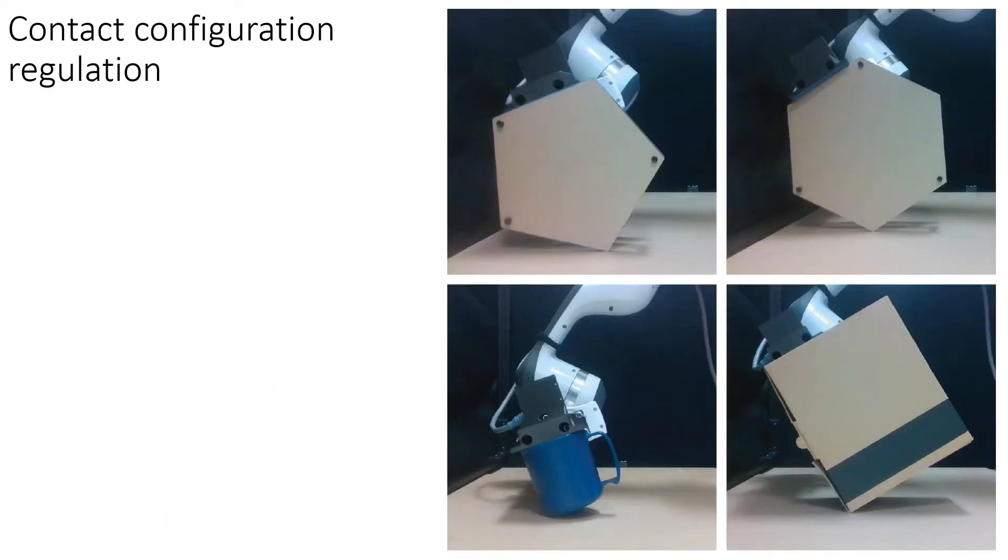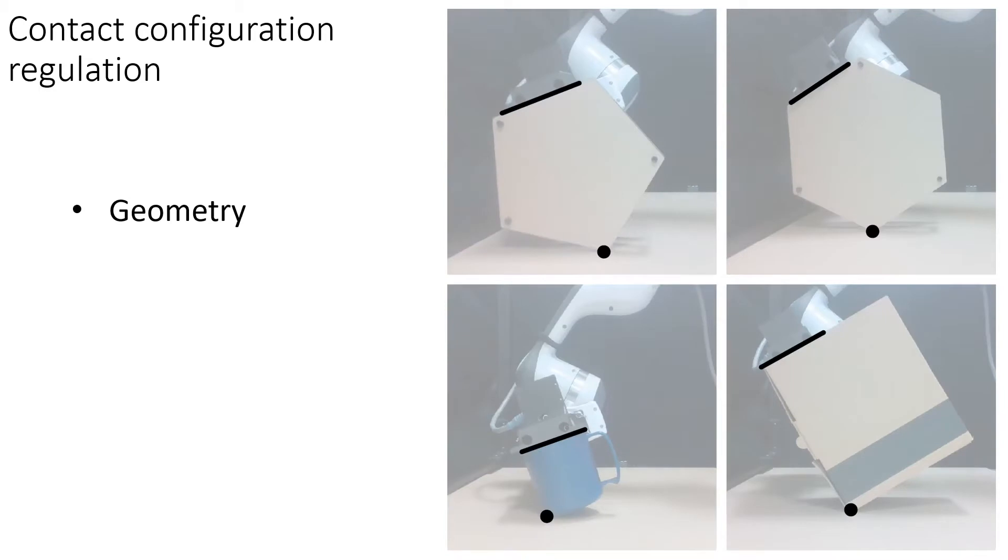We accomplish this by regulating an object's contact configuration, in other words, the geometry, the location, and the mode of contacts between the robot end-effector, the object, and the environment.